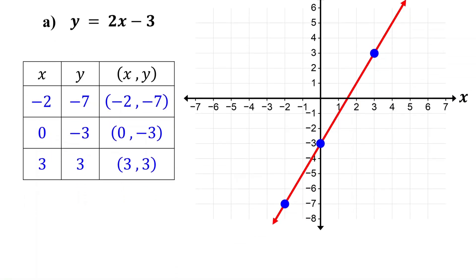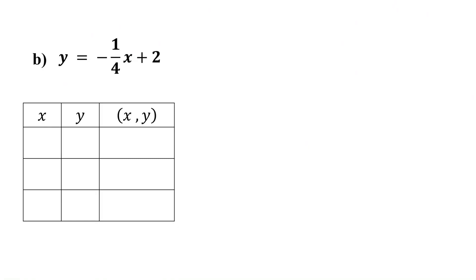Now, what should we do when the equation includes a fraction? You still need to follow the same steps as before. However, when you choose values for x, pick those that are multiples of the denominator so that it will cancel out. This way, the y values become integers, making them easier to plot. Otherwise, you may get fractions, which are hard to plot precisely. Here, the denominator is four, so choose x values that are multiples of four.